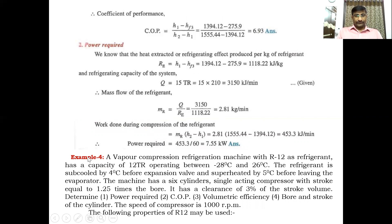A vapour compression refrigeration machine with R21 (difluorodichloromethane) as the refrigerant has a capacity of 12 tons of refrigeration, operating between minus 28°C and 26°C. The refrigerant is subcooled by 4°C before expansion (degree of subcooling = 4°C) and superheated by 5°C before leaving the evaporator (degree of superheat = 5°C).